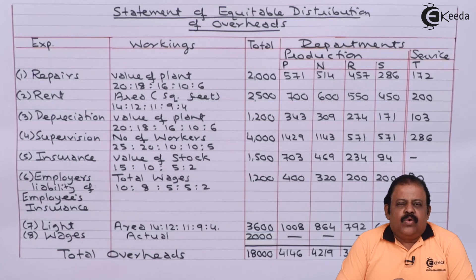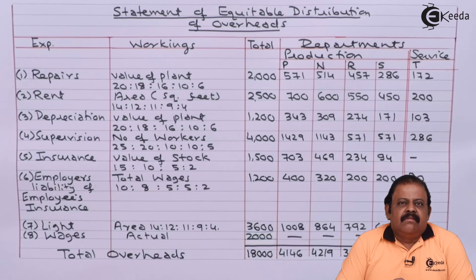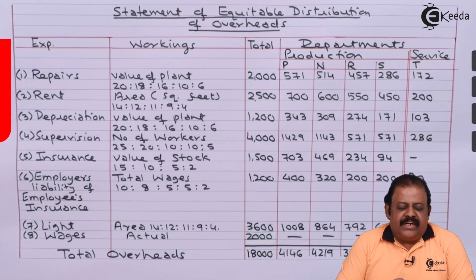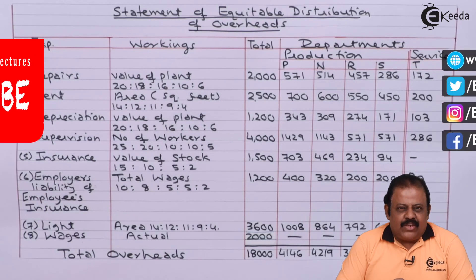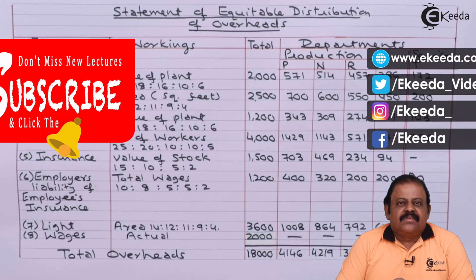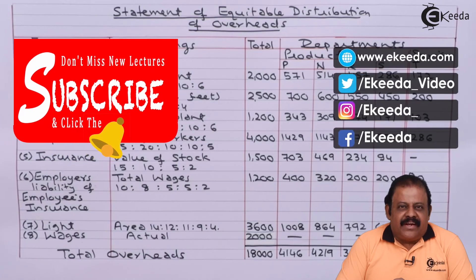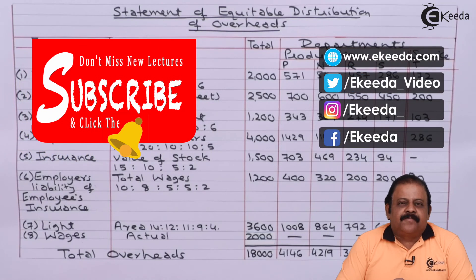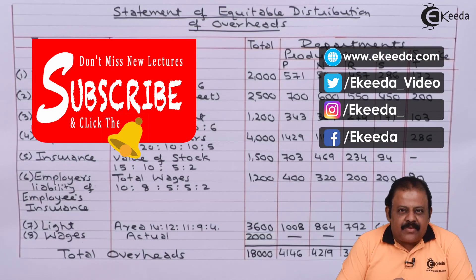We have taken the total of all columns, and this is how we have presented the primary distribution of overheads. Thanks for watching this video — stay in tune with Ikeda and subscribe to our channel.